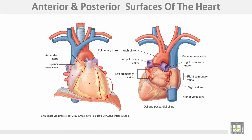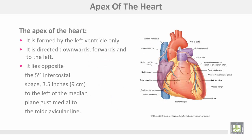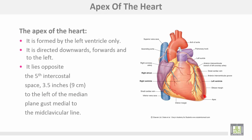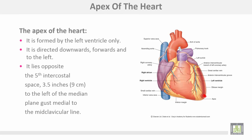The apex of the heart is formed by the left ventricle only and is directed downwards, forwards, and to the left. It lies opposite the fifth intercostal space on the left side, three and a half inches or nine centimeters to the left of the median plane, just medial to the mid-clavicular line. The apex is completely formed by the left ventricle.